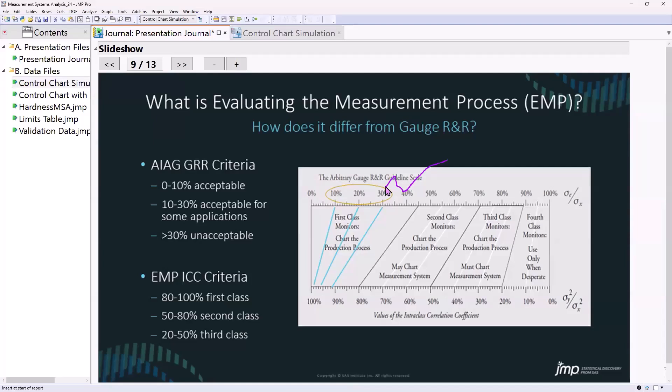This percentage did not speak to the actual effectiveness that we were observing with the gauge. What I learned is if I measured the effectiveness with this intraclass correlation, which looks at a ratio of the variance of that part, the part variance, compared to the total variance, that's a much more effective way of looking at it.